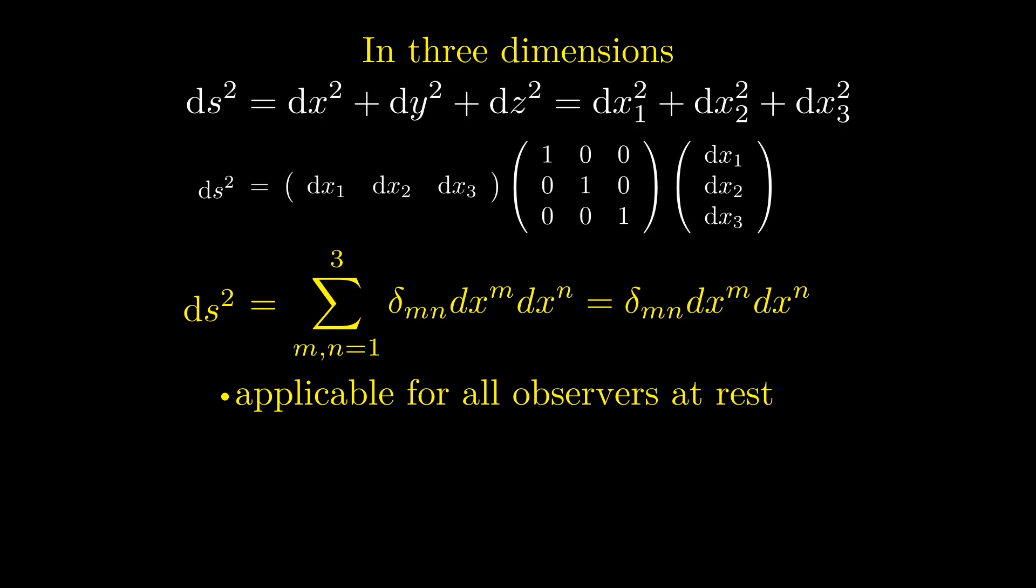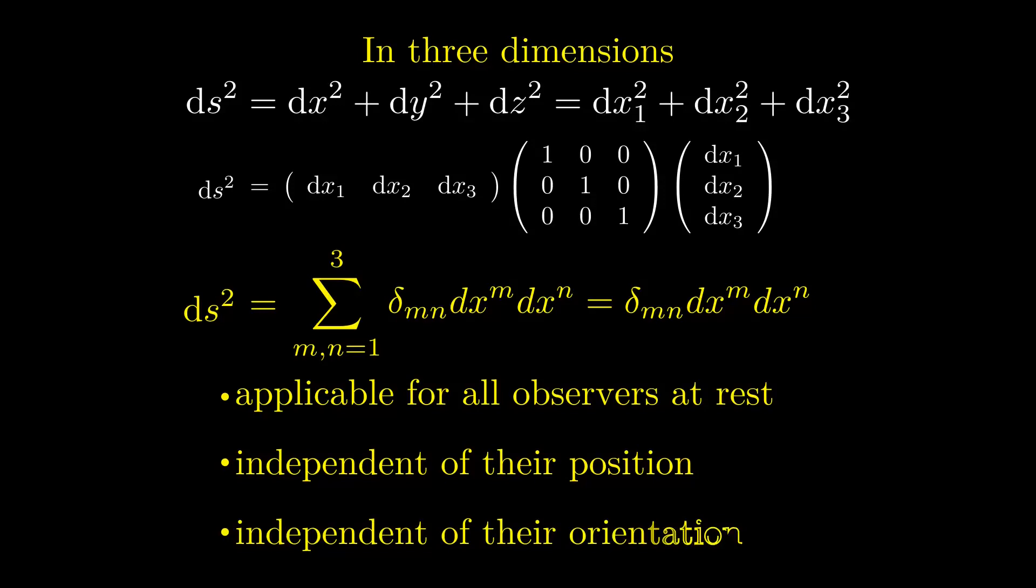If you want to include observers that move with velocities close to the speed of light, this metric has to be extended to the space-time metric. Let's have a look at one experiment first.